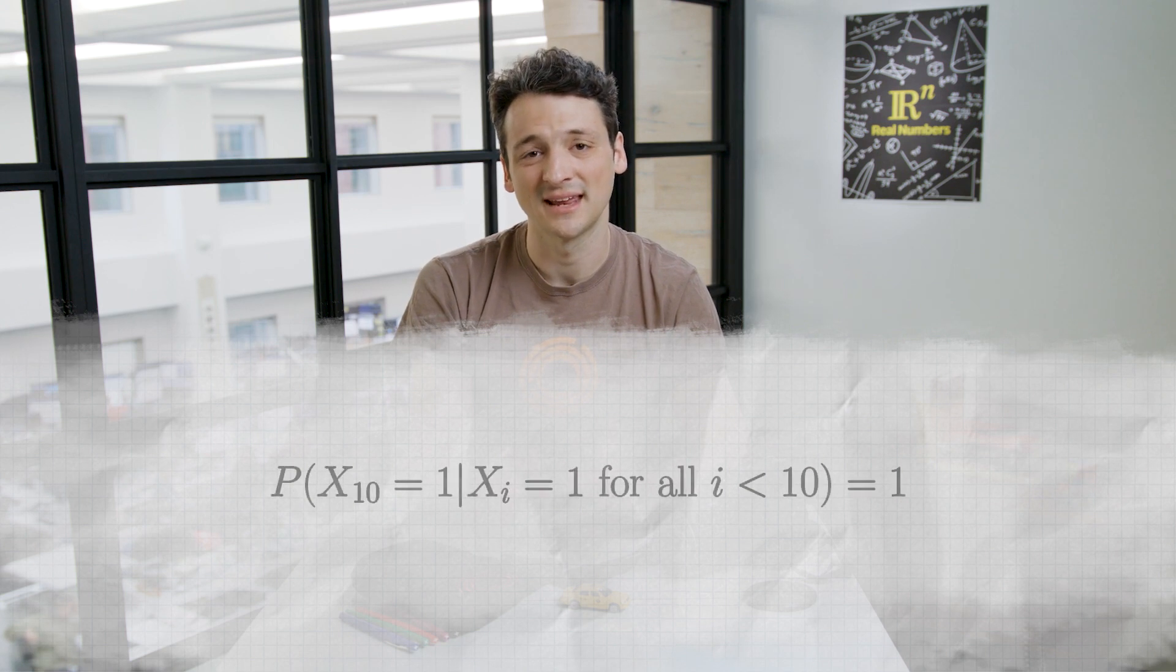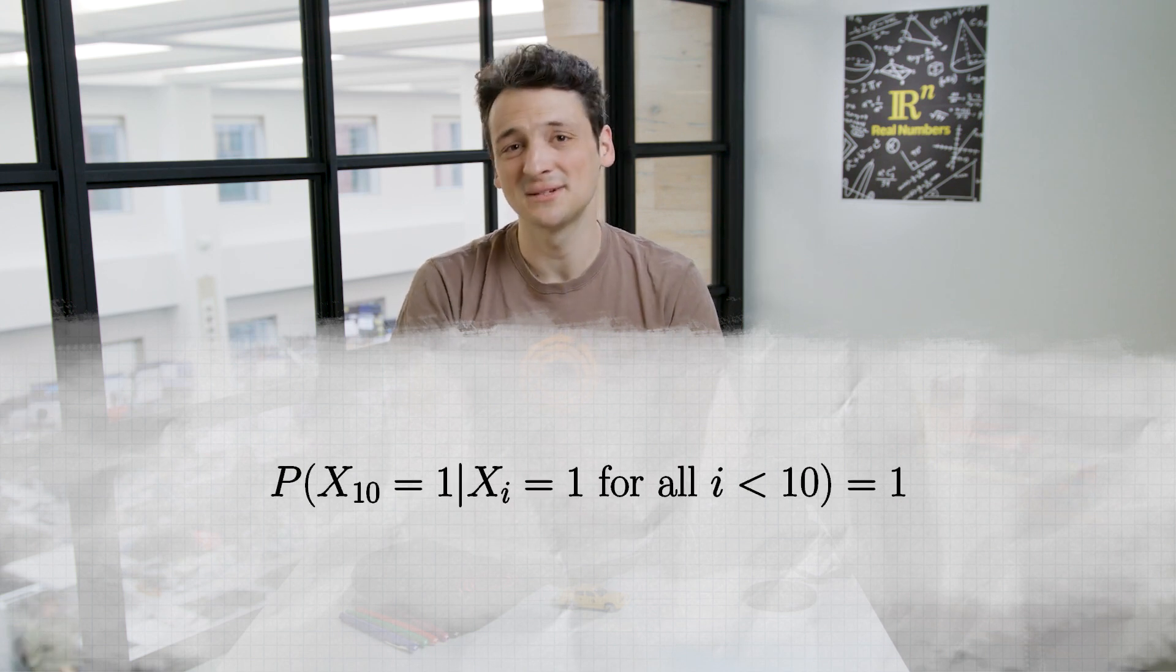So, under these conditions, the probability that x sub 10 equals 1 is 1. Since this conditional probability is different from the unconditional probability of x sub 10, the variables are not independent.